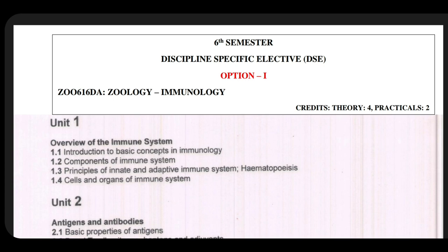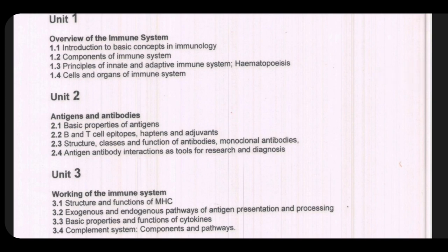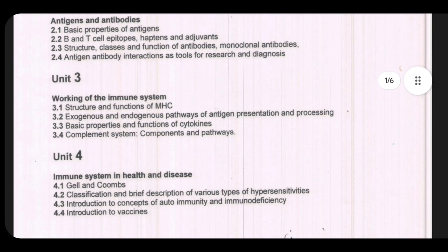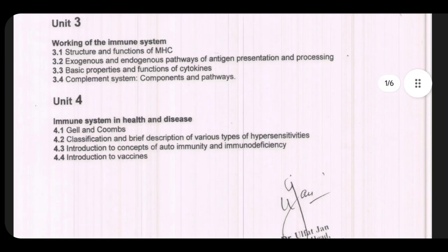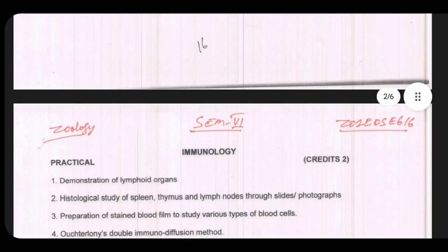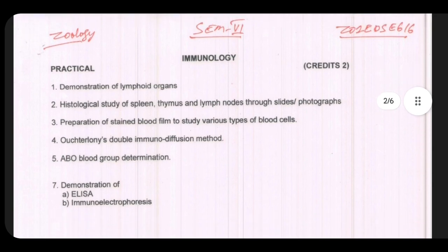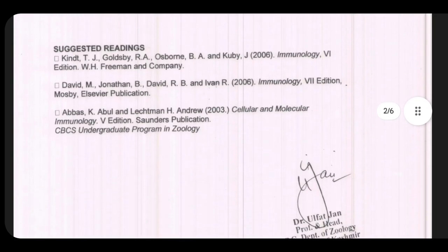For BG sixth semester, University of Kashmir. Unit one is Immune System, unit two is Antigens and Antibodies, unit three is Working of Immune System, and unit four is Immune System in Health and Disease. This is a practical two credits course with suggested readings.